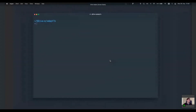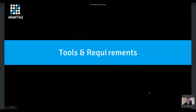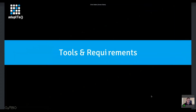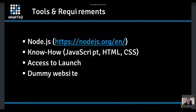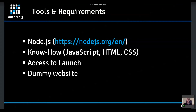Let's talk about tools and requirements. First, before you start you want to have Node.js installed — there's good documentation at the link in the presentation you can get afterwards. You need some know-how of course: at minimum JavaScript, HTML, and CSS to get the basic setup going. You also need access to Launch, and ideally some kind of dummy website — your staging or QA environment — so you have a solid place to test your extension.